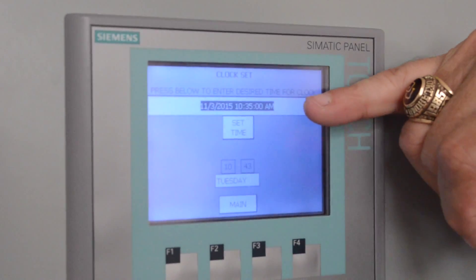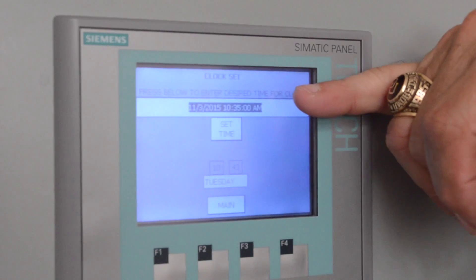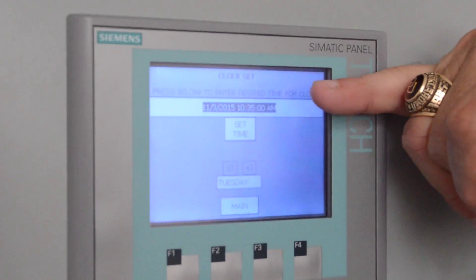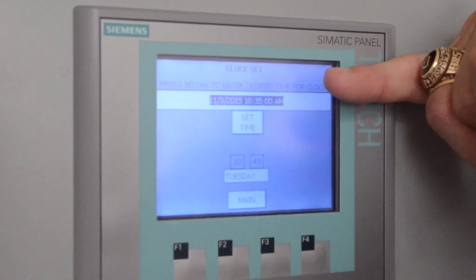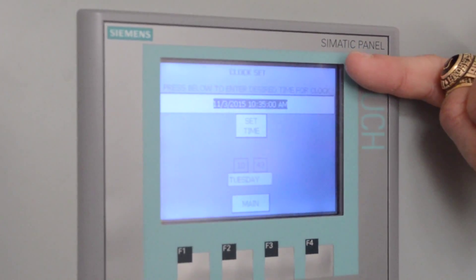It'll pull up the time of day from the last time somebody set it. That is not necessarily today's date, even though it happens to be today because I just did it. But this may be last year if that's the last time somebody did it.